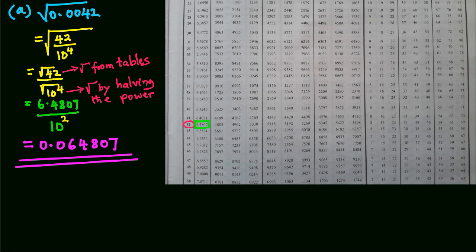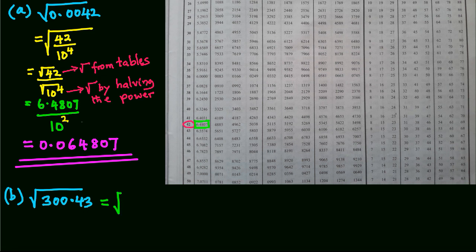In a similar way, we can evaluate square root of 300.43 using tables. We express this as root of 3.0043 times 10 power 2.